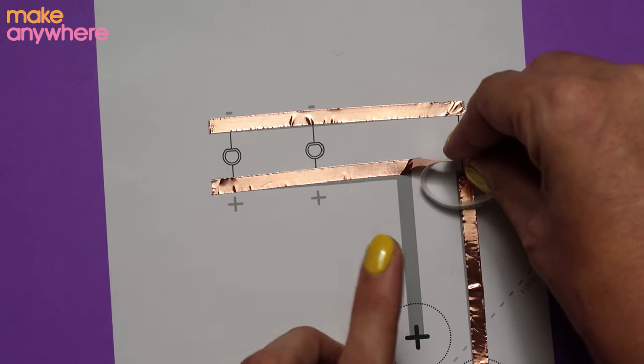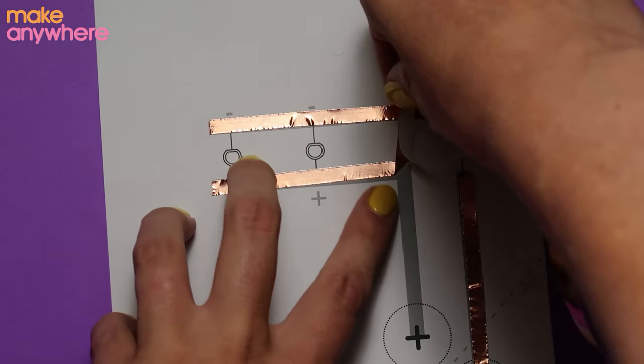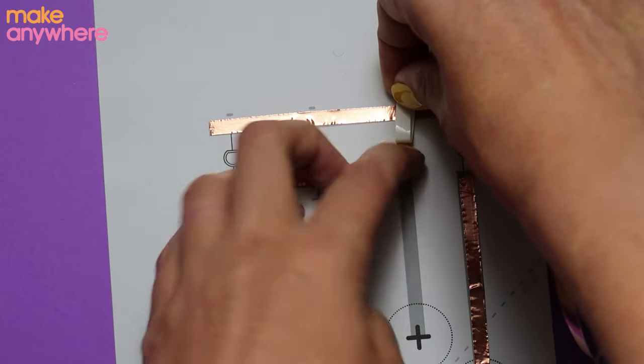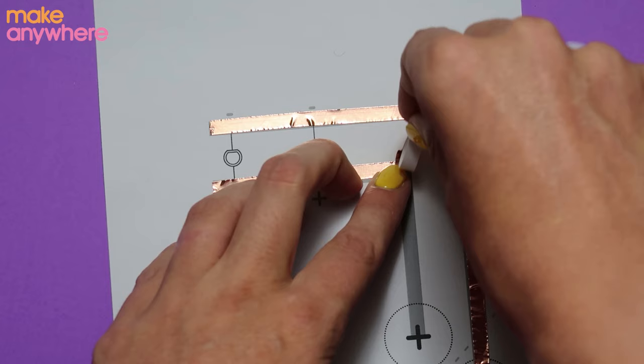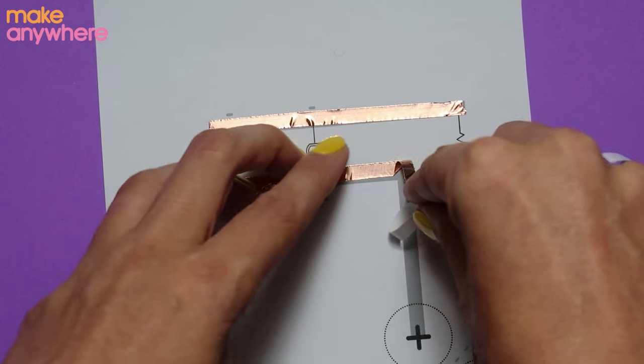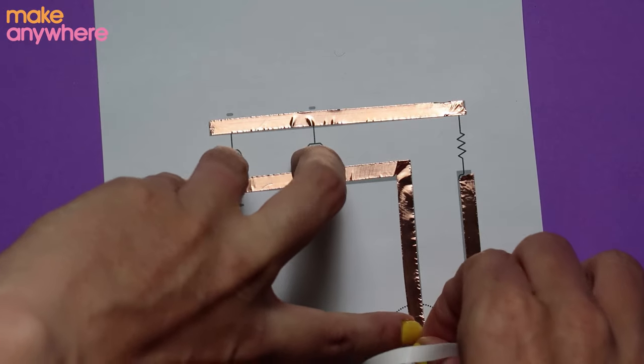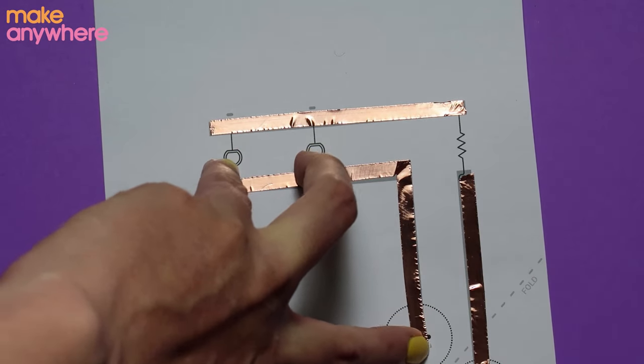First we need to bend it the opposite direction. Fold your copper tape in the opposite direction and then using your finger push down. Now we're going to fold it so it goes back in the right direction. Use your nail and rip the copper tape. There we go.